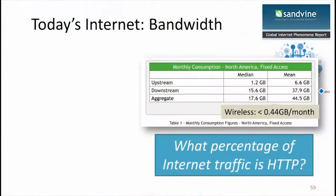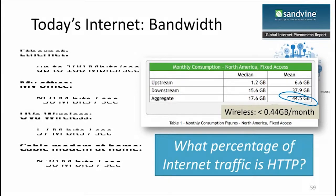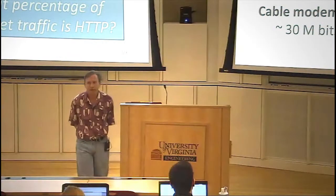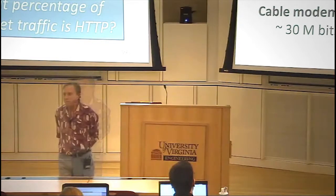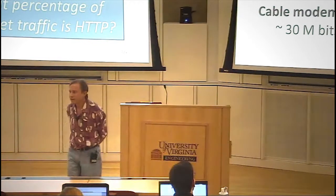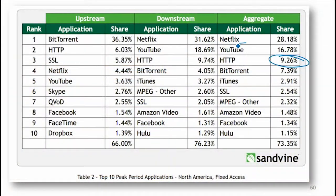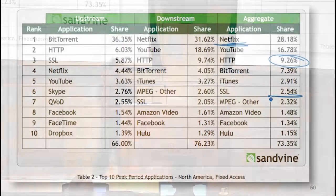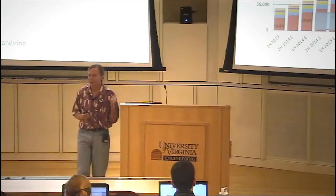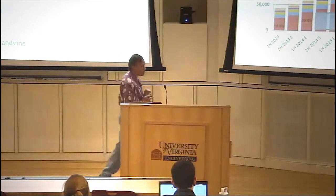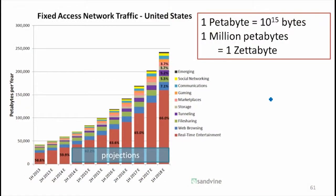This is the Internet today. The average monthly consumption in North America is about 45 gigabytes. How much of that is web traffic — is HTTP? Less than 10% of it is web traffic. Netflix is by far the biggest source of traffic. SSL is getting up there — two and a half percent is secure web traffic. There's a link in the notes about network usage in different parts of the world and projections of how much there will be.